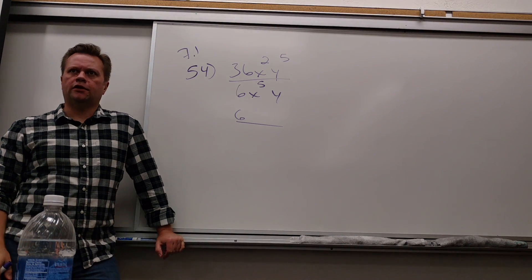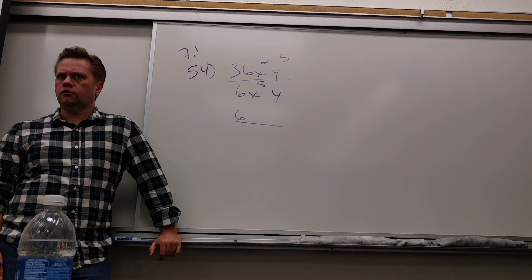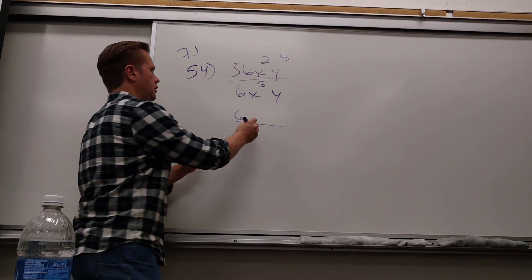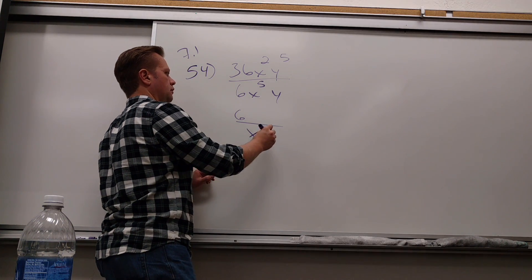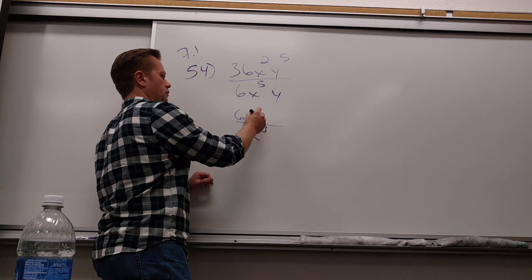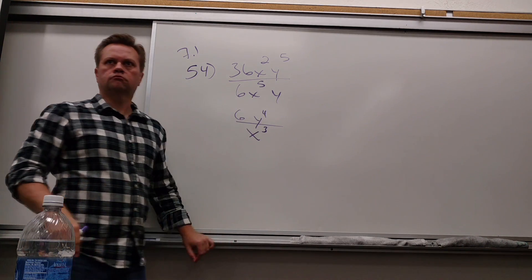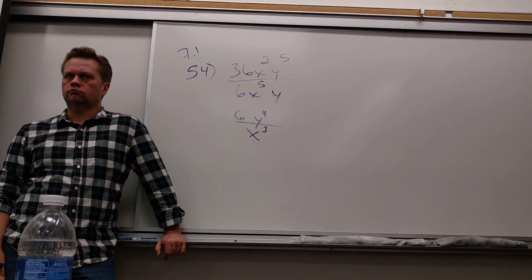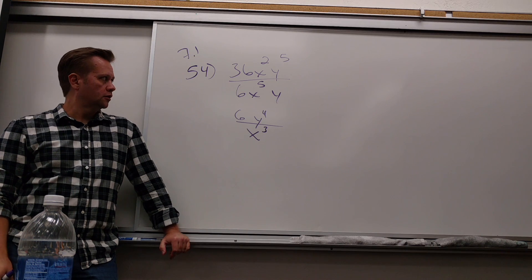So then how many X's are left and where? X in the bottom — the X is in the bottom. And how many Y's are left? At the top — four. Could they? Could they? Yeah, that's our answer.